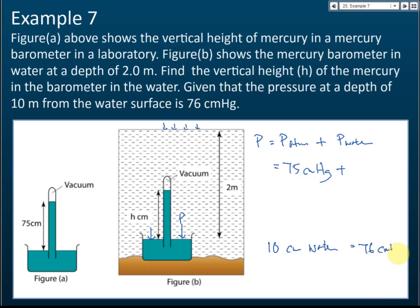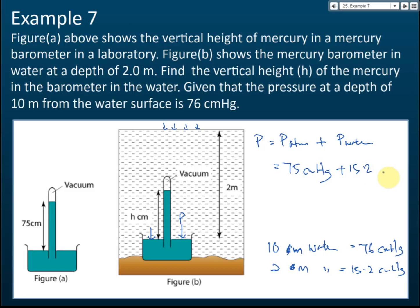The pressure caused by the water: the question tells us that 10 meters of water is equivalent to 76 cm mercury. This barometer is at 2 meters of water, not 10 meters. So 2 meters of water is equivalent to how many cm mercury? 10 meters gives 76 cm, so 1 meter gives 7.6 cm, and 2 meters gives 15.2 cm mercury.